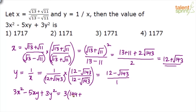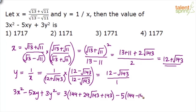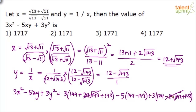For 3 × x²: x² = (12 + √143)² = 144 + 24√143 + 143. For -5xy: x × y = (12 + √143)(12 - √143) = a² - b² = 144 - 143 = 1, so -5 × 1 = -5. For 3 × y²: y² = (12 - √143)² = 144 - 24√143 + 143. Observe that 3×24√143 and -3×24√143 cancel. So 144 + 143 = 287.